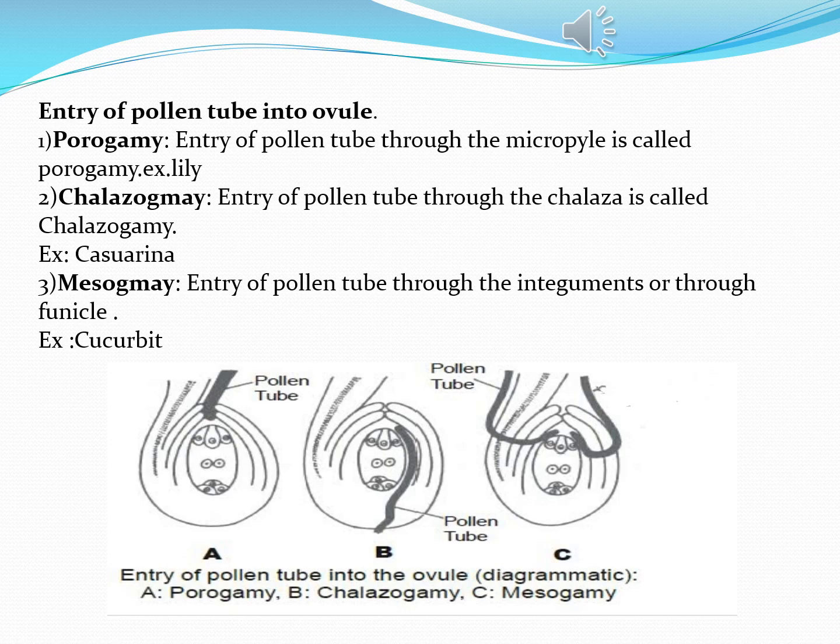The second method is chalazogamy — entry of the pollen tube through the chalazal part is called chalazogamy. Example: Casuarina. The third method is mesogamy — entry of the pollen tube through the integuments or through the funicle, apart from the micropyle and chalaza. Example: Cucurbita.